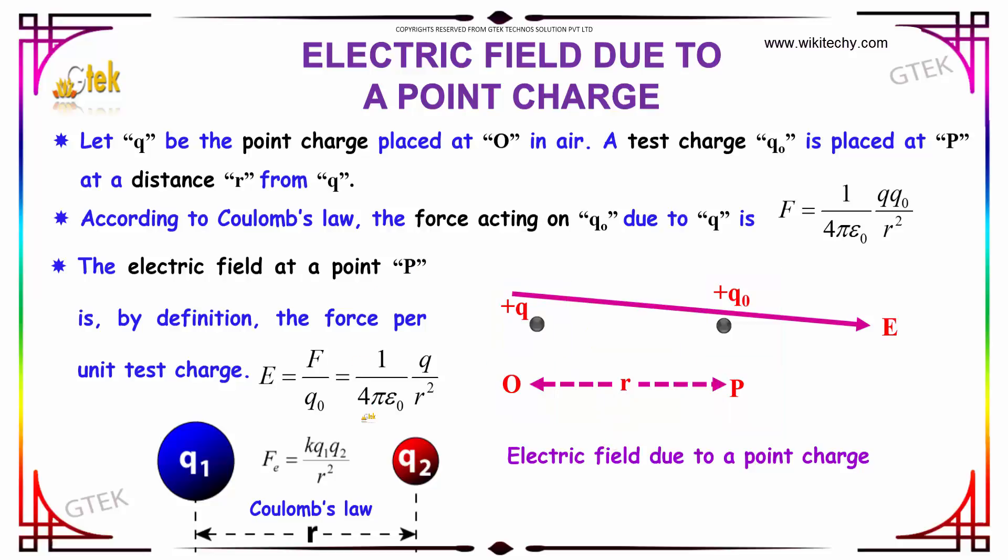According to Coulomb's law, the force acting on Q0 is F equal to 1 divided by 4 pi epsilon 0, Q1 Q0 divided by R square. We know that Coulomb's law is F equal to K into Q1 Q2 divided by R square. When we apply the logic of Coulomb's law here, the force will be in this way.